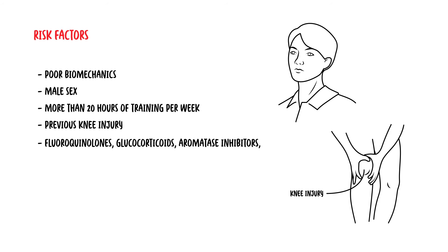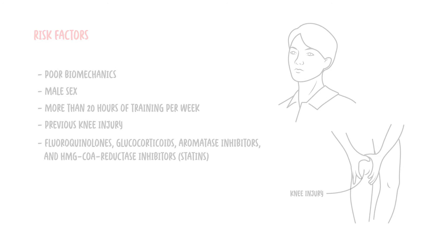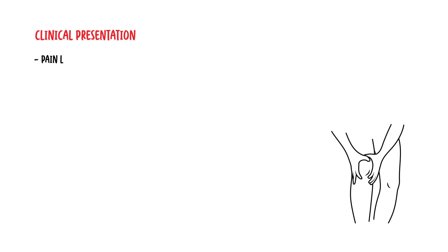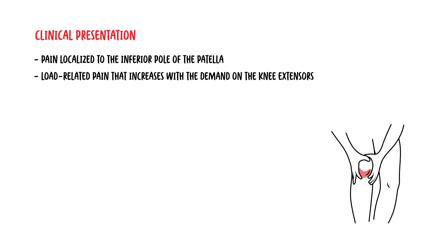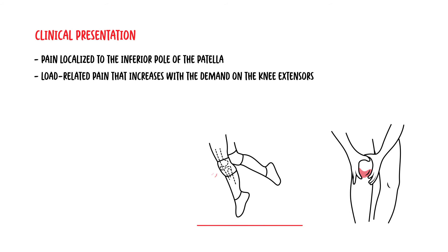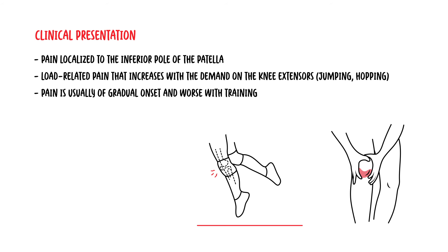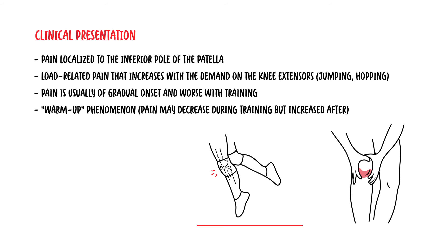The clinical presentation of patella tendinopathy is pain localized to the inferior pole of the patella — patients often point to this spot. The pain is load-related and increases with demand on the knee extensors such as during jumping and hopping. Pain is usually of gradual onset and worse with training. There is also a warm-up phenomenon in which patella tendon pain may decrease during training but is often much worse after training or the following day.